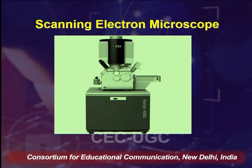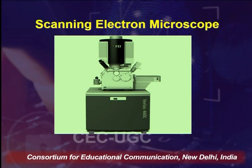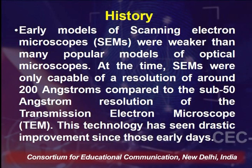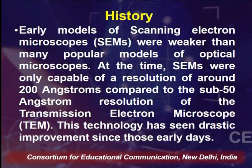This is how a scanning electron microscope looks — it has a vacuum chamber required for the electron gun. Early models of SEM were weaker than many optical microscopes but were capable of resolution of around 20 angstroms, compared to sub-50 angstrom resolution of TEM. With improvements in technology, both SEM and TEM can now magnify images up to thousands of times. The principle of SEM: when an accelerated primary electron strikes the sample, it produces secondary electrons, collected by a positive-charge electron detector, giving a three-dimensional image. TEM produces a 2D image while SEM produces a 3D image.